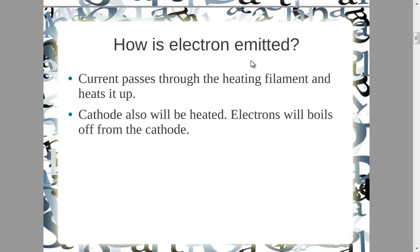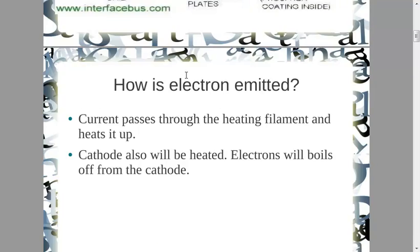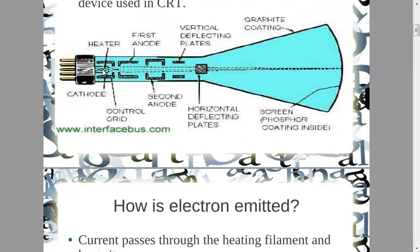When current passes through the heating filament and it heats up, the cathode will also be heated, and this will cause electrons to boil off from the cathode. These filaments heat up, electrons boil off and are deposited on the cathode, which will cause them to move on toward the screen.